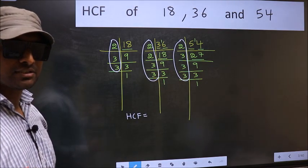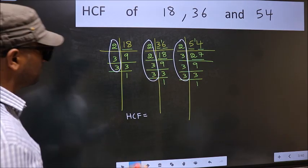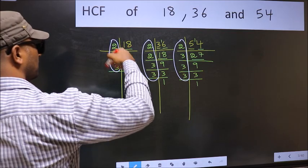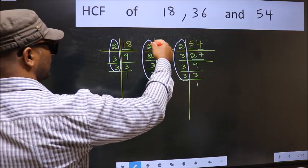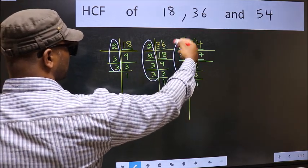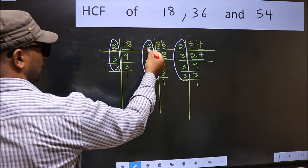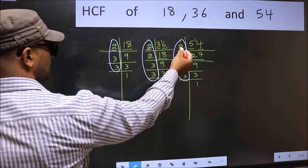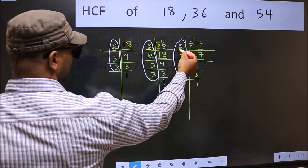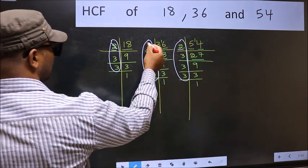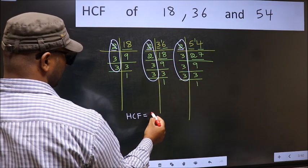So now let us find the numbers which are present here and here and here and also here. Starting with the number 2. Do we have 2 here? Yes. So go to the next place. Do we have 2 here? Yes. So cut 2 right here.